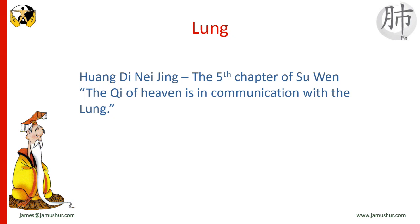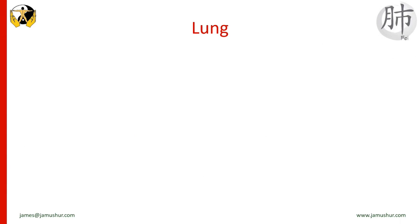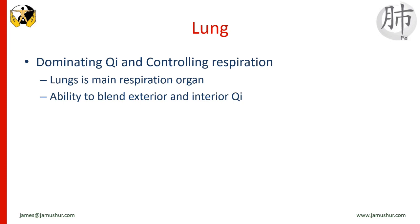In the Huangdi Neijing, the fifth chapter of the Suwen states that the qi of heaven is in communication with the lung, meaning it is the most external zang organ. The chest is called the sea of qi. Dominating qi has two aspects: dominating the qi of respiration and dominating the qi of the whole body. The lung is a respiratory organ through which the qi from the exterior and the qi from the interior blend together. The human body inhales clean qi from the natural environment and exhales waste qi — this is known as getting rid of the stale and taking in the fresh.